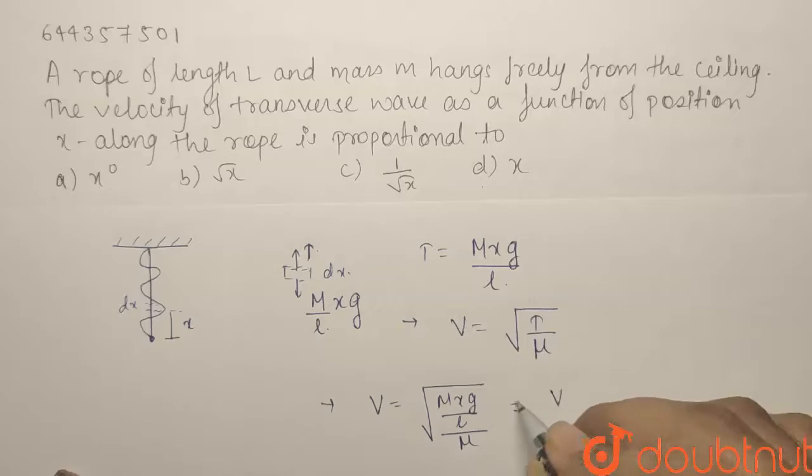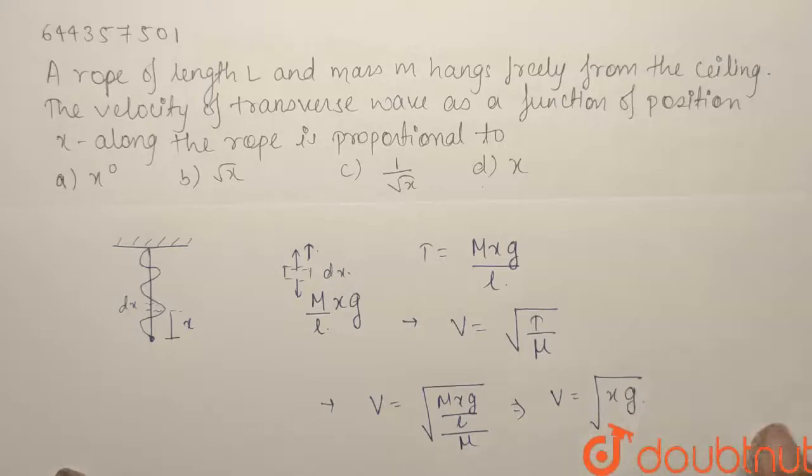Mass per unit length. V will be equal to what? Under root, what is μ? M by L itself. So it is nothing but under root xg.